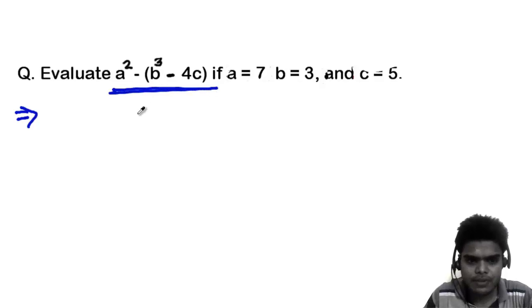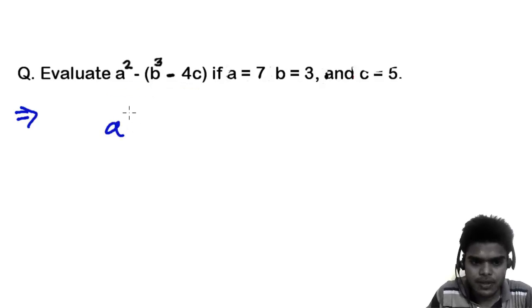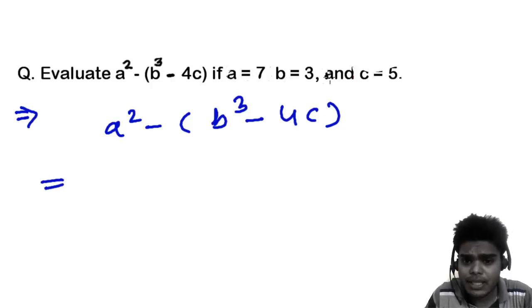So we need to evaluate this thing. Let me first write the expression: this is a square, inside the bracket b cube minus 4c, and we know the value of a, b and c.